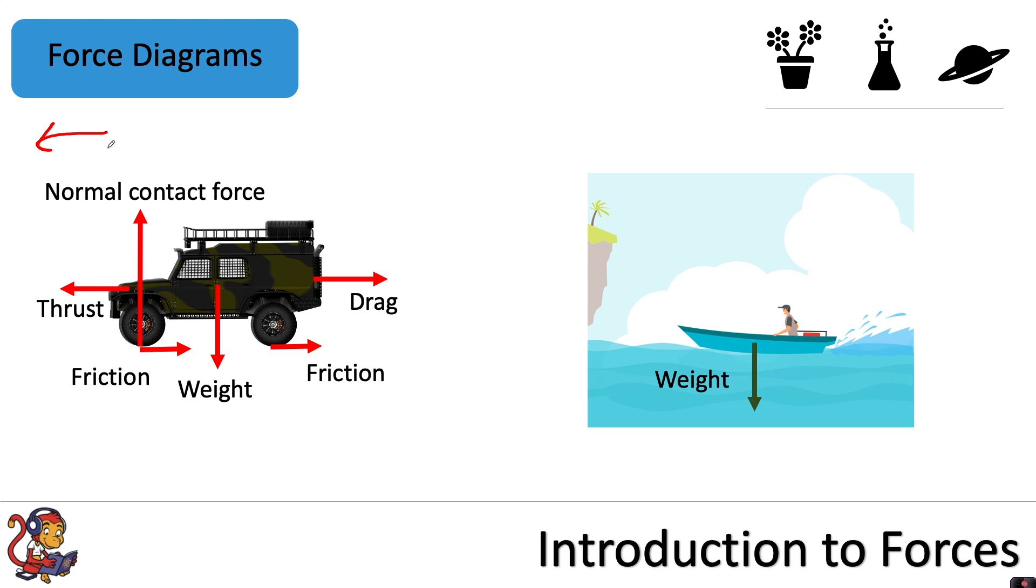For this boat in the water, you've got weight acting downwards. Up thrust, which is a force experienced by objects in water pushing upwards. You've got thrust again from the engine pushing the boat forward. And you've got drag, which is acting against the motion of the boat.